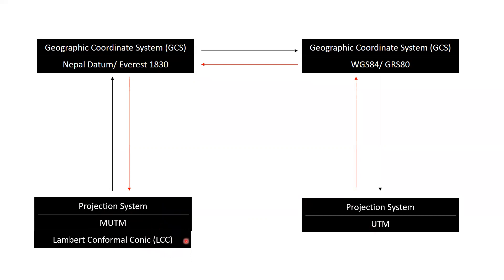Or if we want to move from LCC to UTM, we must follow this path: LCC → Nepal Datum → WGS84 → UTM. Conversely, if we want to move from UTM to either MUTM or LCC, we start from UTM, move into WGS84, then to Nepal Datum, and finally into either MUTM or LCC system.